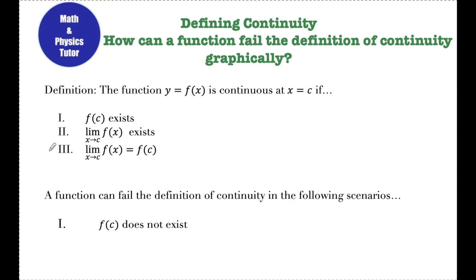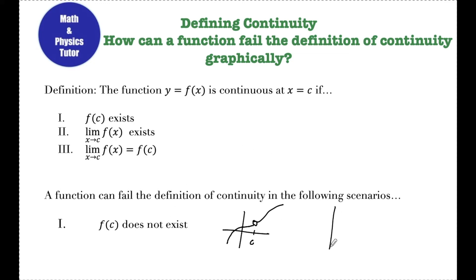Each of these three conditions can fail in separate ways when looking at a graph. If we look at that first condition — f of c does not exist — that just means that in your graph, the graph is traveling along and somewhere along that graph there might be a hole. So that means that at that x value c, the value of the function does not exist.